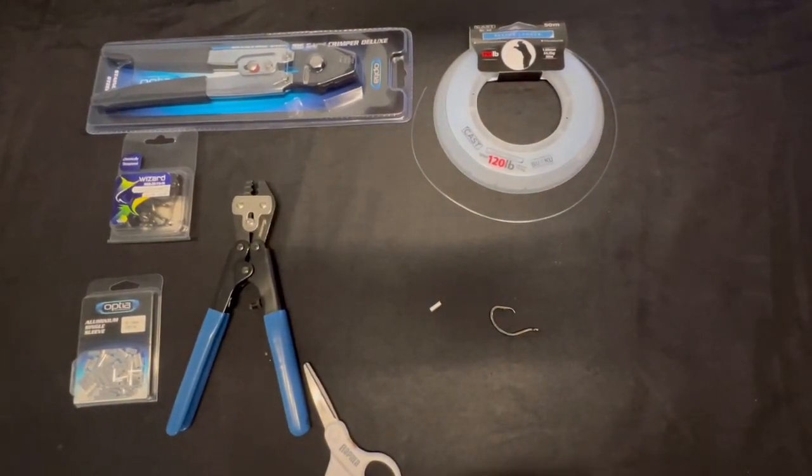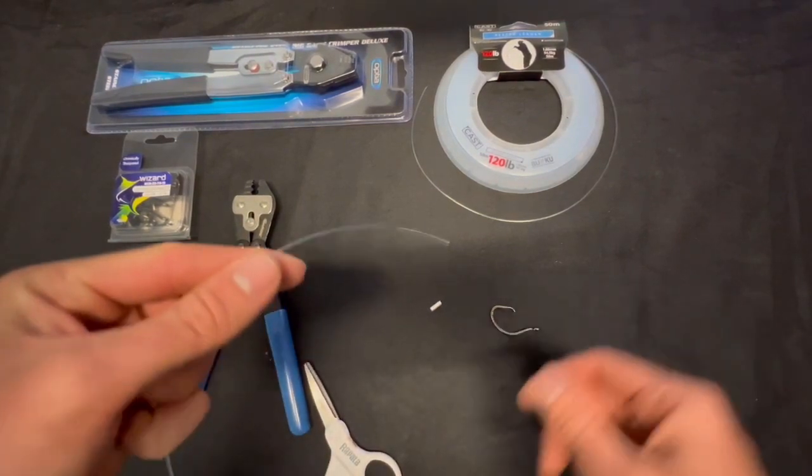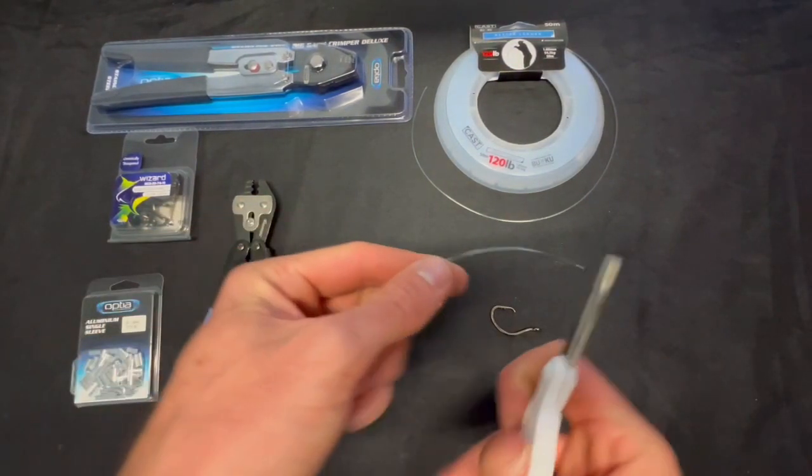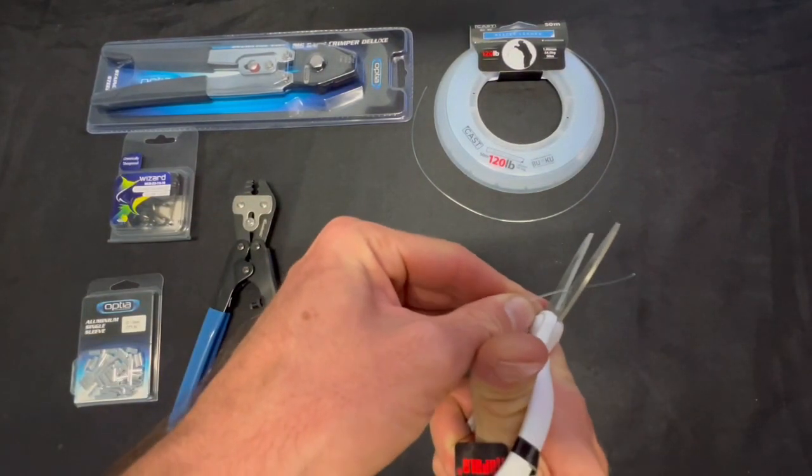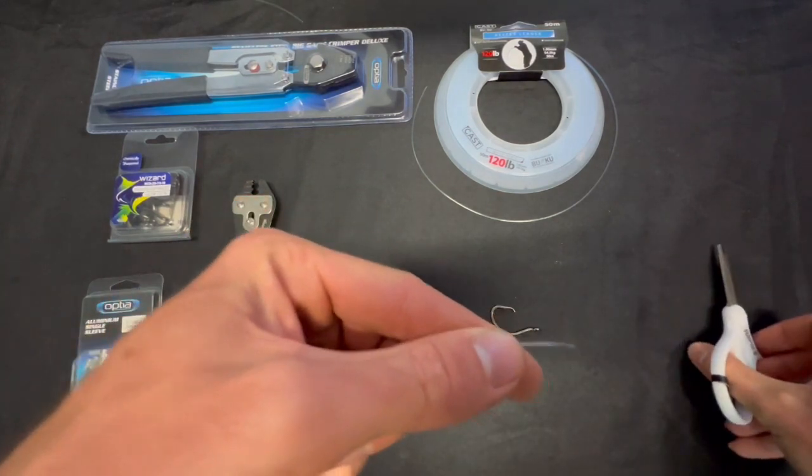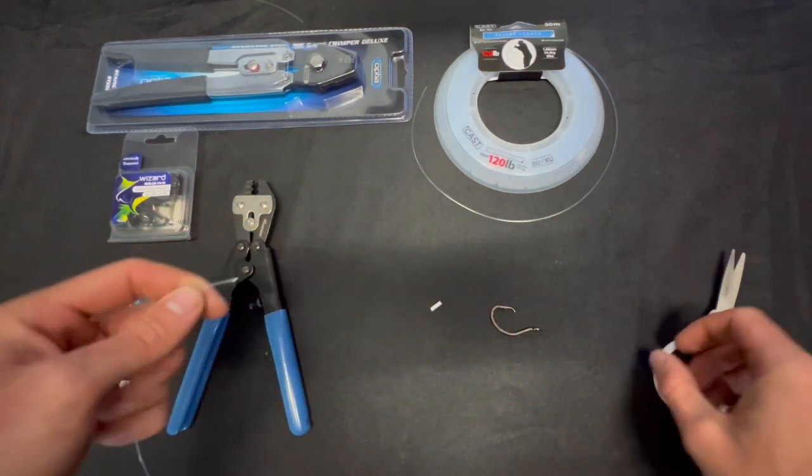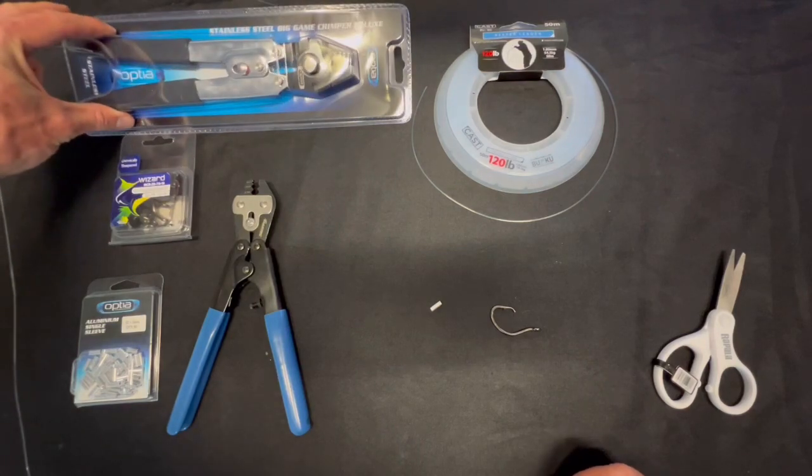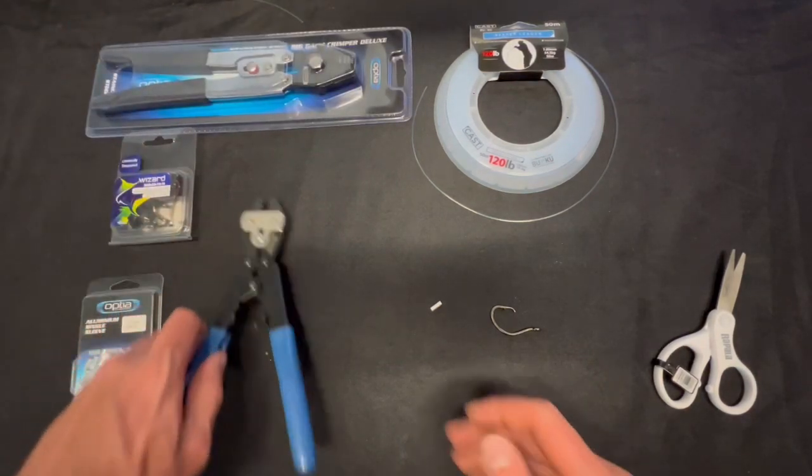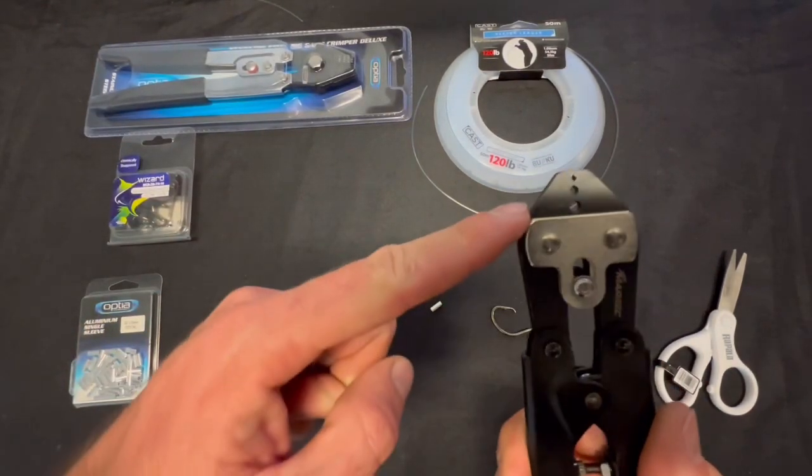So we cut the end of the leader on a 45 degree angle which will go through the crimp much easier. Then we're going to use our crimping pliers. Our crimping pliers we use are a pair of pliers that have the holes in it and not the teeth. It's really important to get the right set of pliers there.